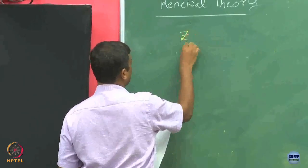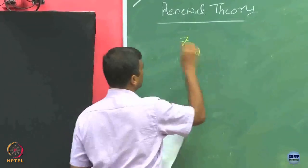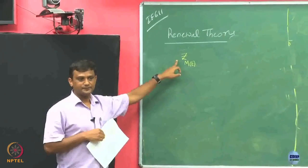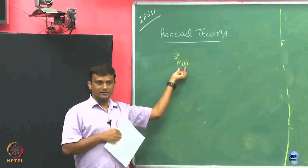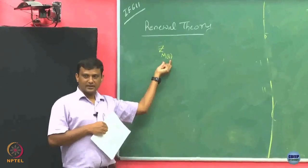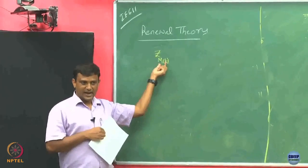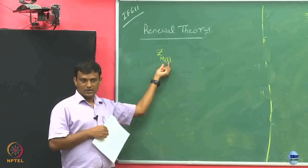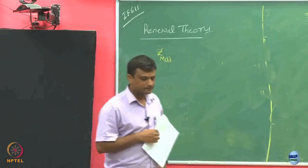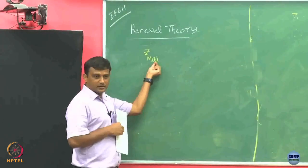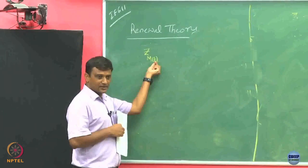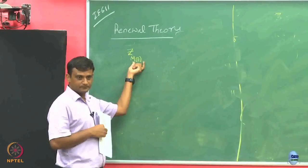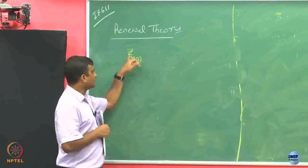Let us take Z_m(t). So Z subscripted by m of t. This m(t) is an integer value. What I am looking at is a renewal happening for the m(t)-th time. Given a t, m(t) is going to denote the number of renewals that has happened in the interval [0, t]. And if you look at Z of m(t)...